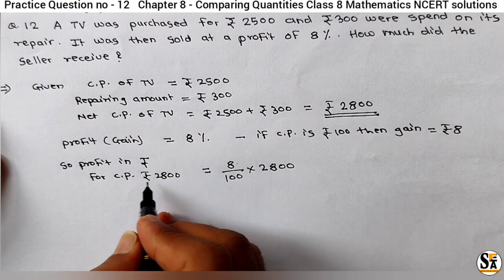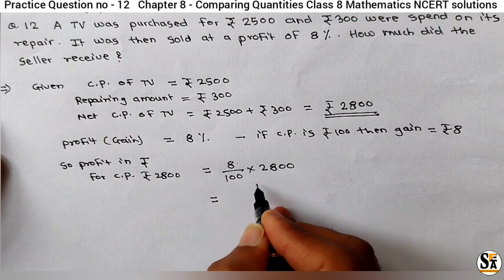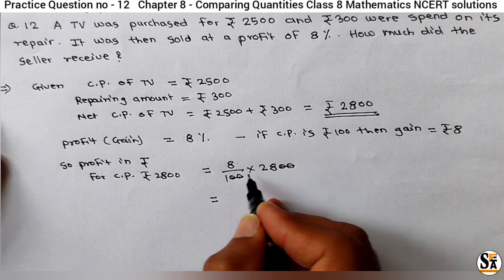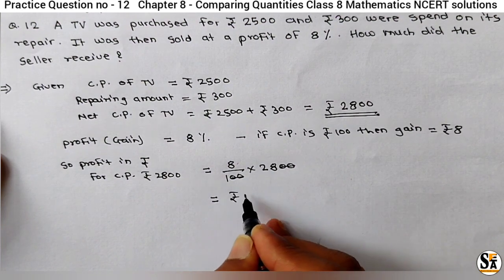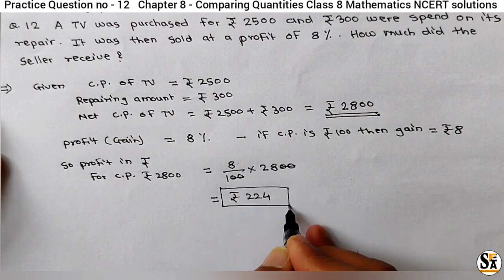We are calculating profit in Rs. So just simplify this. We will get, this 100 will get cancelled with 2800, and 8 into 28, that is Rs 224. So we got this profit in Rs.